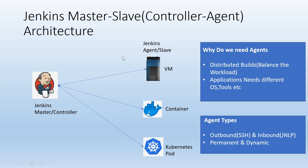For example, some applications may run on Linux, or some applications may build only on Windows machines where we have batch scripts, etc. So in that case we need separate machines for Windows-based applications and separate machines for Linux-based applications. This problem can be solved by using containers, where we can create different images for different types of application builds and execute all the builds in a single machine by creating different containers.